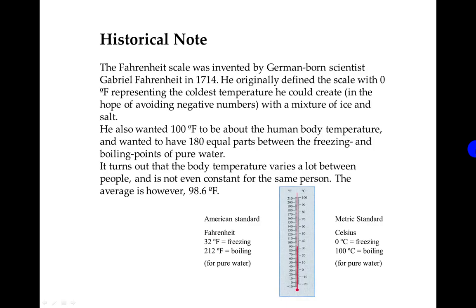Some accounts talk about the coldest and hottest temperatures he experienced in Germany that year. He also wanted 100 degrees Fahrenheit to be about the human body temperature and wanted to have 180 equal parts between the freezing and boiling points of pure water. It turns out body temperature varies a lot between people. The average is 98.6 degrees Fahrenheit, which suggests he may have been running a temperature when he set his standard.